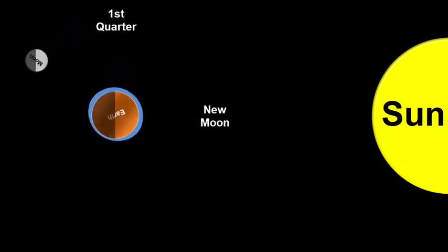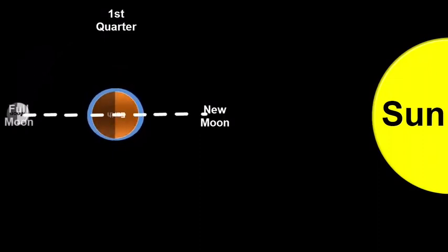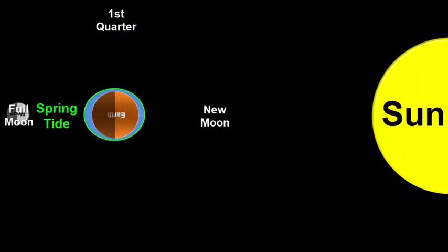The moon moves again and reaches the full moon position. Here also the sun, moon, and the earth are in a straight line, and therefore we get a spring tide.